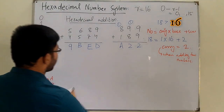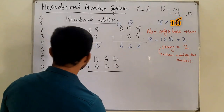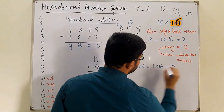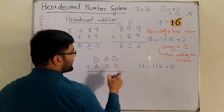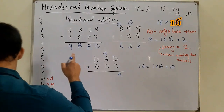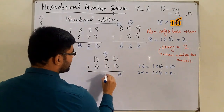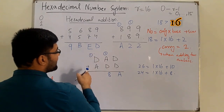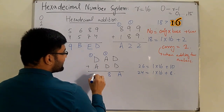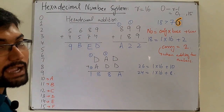Next example: DAD plus ADD. D is 13, so 13 plus 13 is 26. 26 = 1 × 16 + 10, so the sum is A and carry is 1. Then A is 10 and D is 13, so 10 + 13 + 1 carry = 24. 24 = 1 × 16 + 8, so sum is 8 and carry is 1. Again the same: sum 8, carry 1. Bringing down the carry, the final answer is 188A.